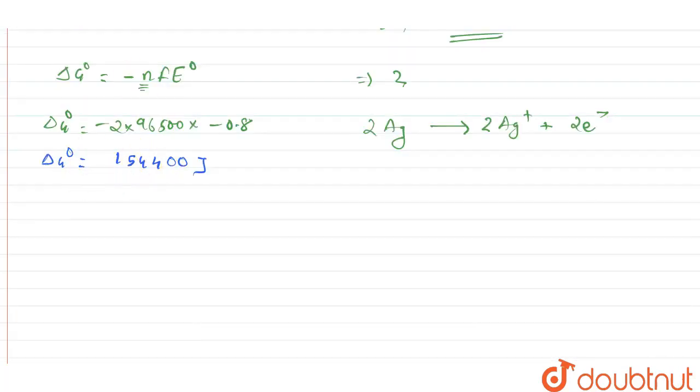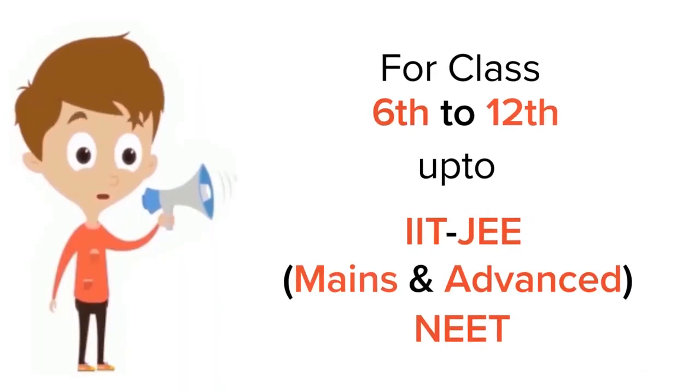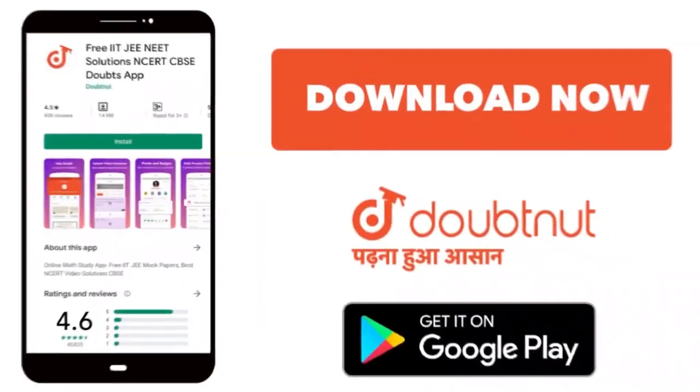To write this in kilojoule, we can write this as ΔG° is equal to 154.4 kilojoule. So this will be the answer. Option number two is the correct answer. Thank you. For class 6 to 12, IIT-JEE and NEET level. Trusted by more than 5 crore students. Download Doubtnet app today.